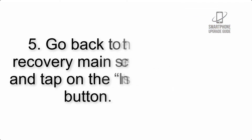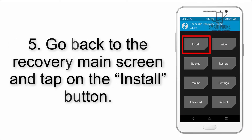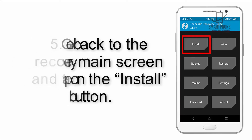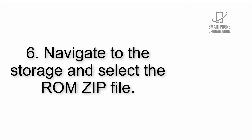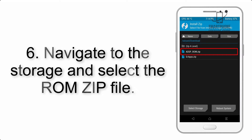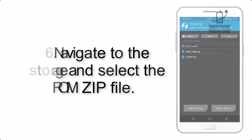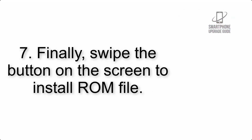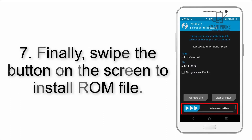Step 5: Go back to the recovery main screen and tap on the Install button. Step 6: Navigate to the storage and select the ROM zip file. Step 7: Finally, swipe the button on the screen to install the ROM file.